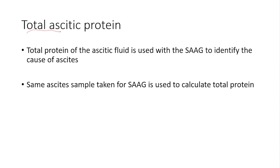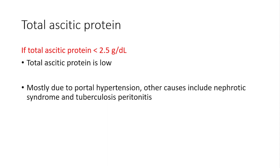There is also another test calculated alongside the SAAG, and that is the total ascitic protein. Total ascitic protein is used with the SAAG to identify the cause of ascites, using the same ascites sample. If the value is less than 2.5 g/dL, the total ascitic protein is low, and this is mostly caused by portal hypertension. Other causes include nephrotic syndrome — where oncotic pressure is reduced due to loss of serum proteins — driving fluid into the abdomen, and also tuberculous peritonitis.